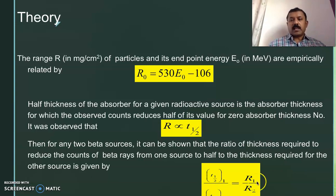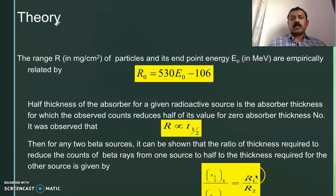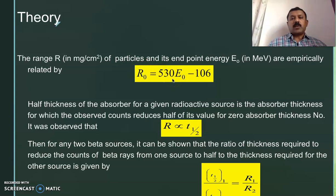This is the relation that we use. We determine the half-thickness for two radioactive sources; one source is a standard source from which we can calculate the range. For the unknown source, we can calculate the energy through these relations.